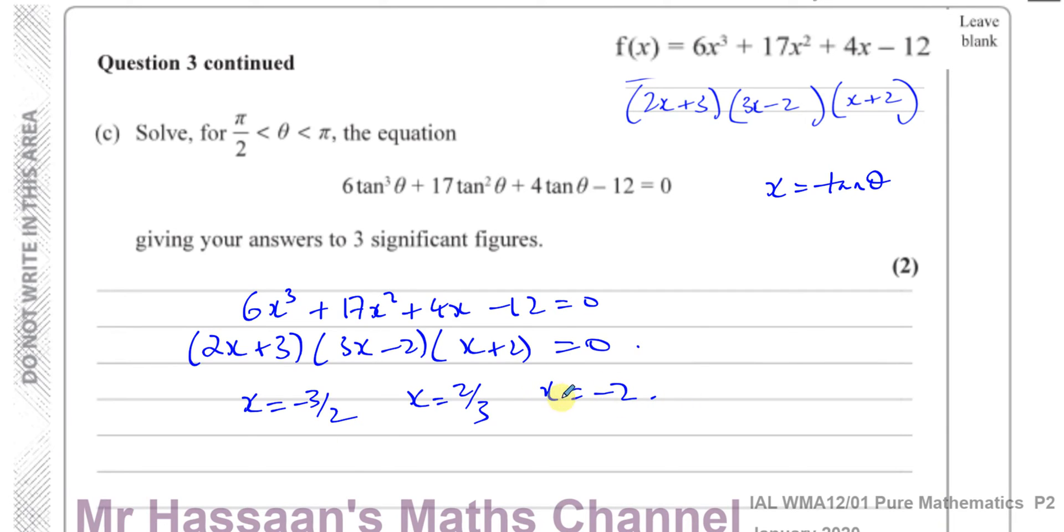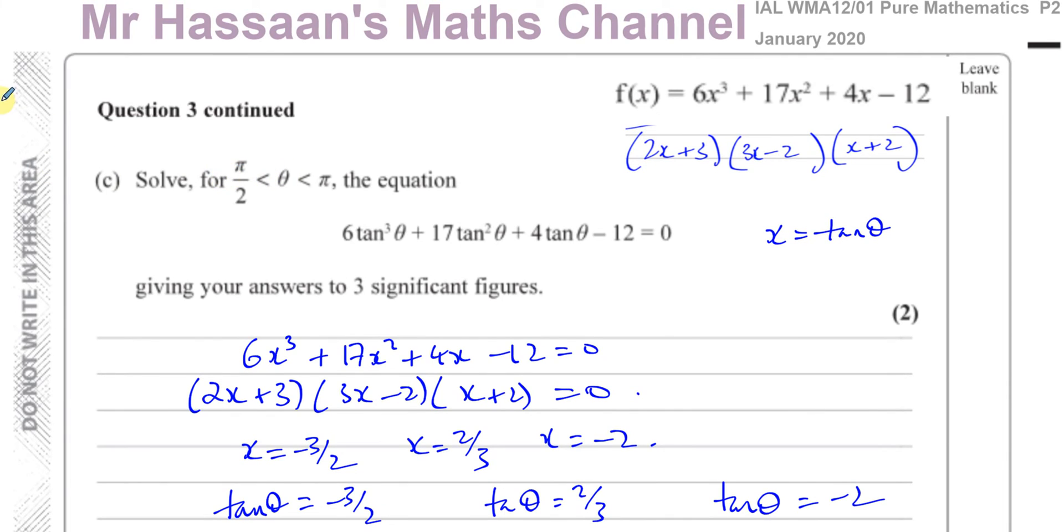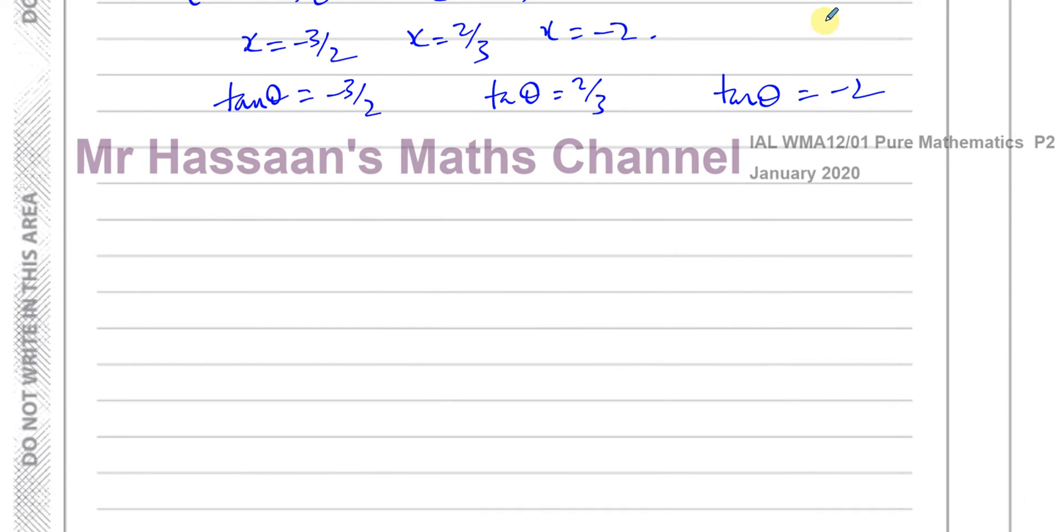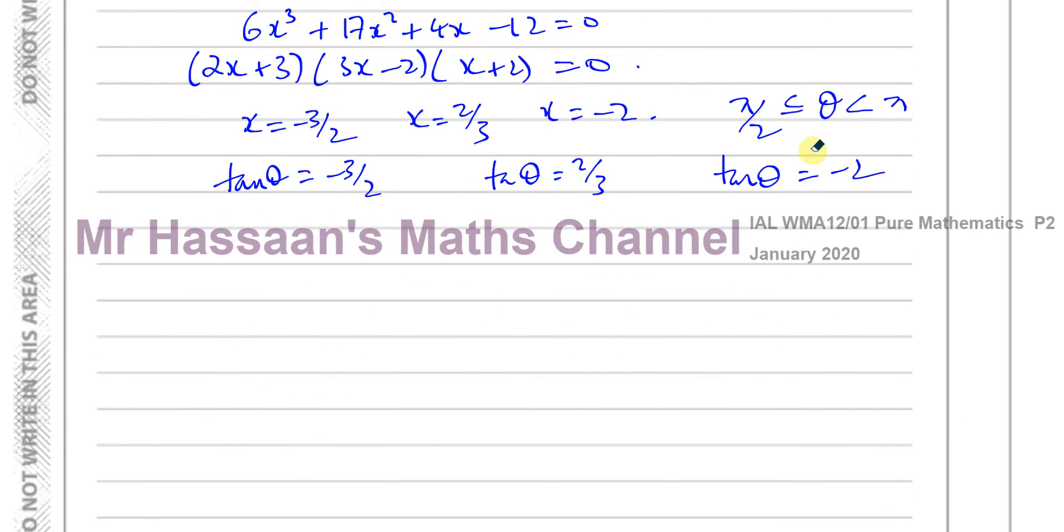This will give us x equals minus 3 over 2, x equals 2 thirds, and x equals minus 2. Those are the three solutions to this equation. As we can see, x and tan theta are the same thing, so I can say tan theta equals minus 3 over 2, tan theta equals 2 thirds, and tan theta equals minus 2. We have to solve this equation for theta between pi over 2 and pi. So for values of theta between pi over 2 and pi, just make sure the equal sign is not there—it doesn't really make a difference in the answer, but it's not there here.